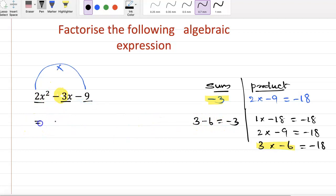So we can write equals to 2x squared minus 6x plus 3x minus 9. Now let us find the common factors.